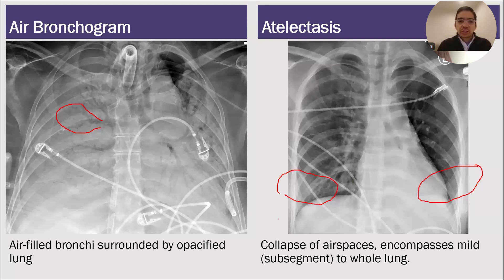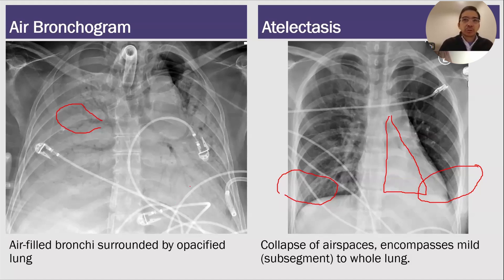But a patient can also have pretty significant atelectasis. In this patient, there's a triangular opacity behind the heart right here, and that is the entire left lower lobe. This person's entire left lower lobe has become atelectatic, or it's collapsed.